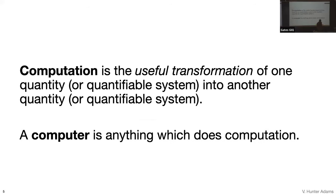In order to make that claim, I need to provide a little bit of context. The first thing we need to agree upon is what a computer even is. I'd like to offer a functional definition for this presentation. In my estimation, computation is the useful transformation of one quantity or one quantifiable system into another quantity or another quantifiable system. And a computer is anything which does computation—anything which usefully transforms one quantity into another quantity. This is the most general definition I can come up with.